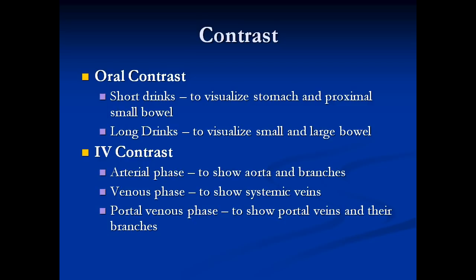When we do CT scans of the abdomen, we sometimes use contrast media and sometimes we don't. We can use oral contrast in the form of short drinks or long drinks. Short drinks are used to visualize the stomach and the proximal small bowel, whereas long drinks are used to visualize the small and large bowel. We can also use intravenous contrast — iodine compounds injected in the arm.